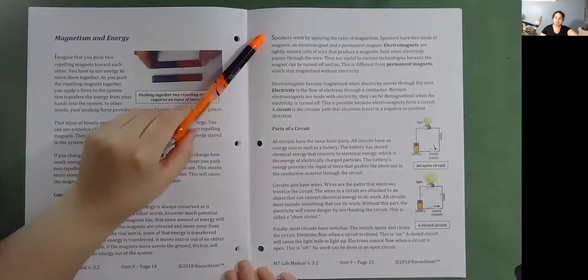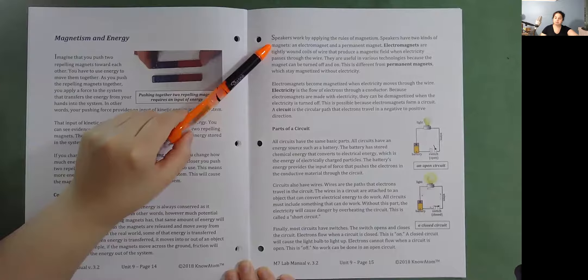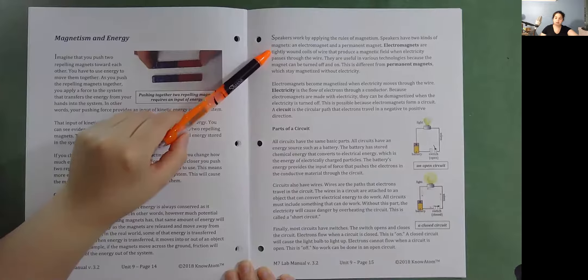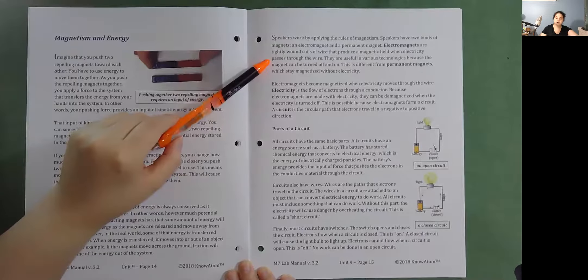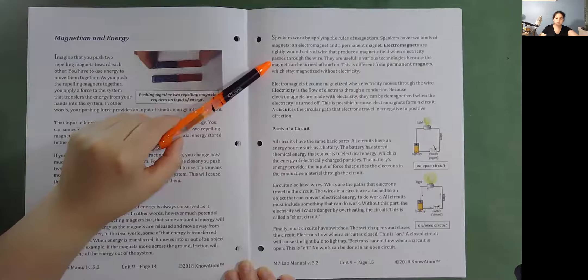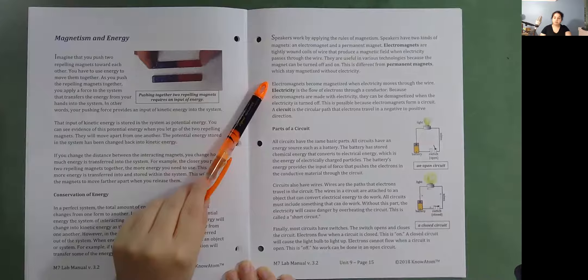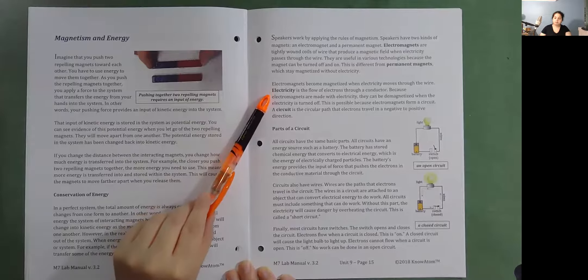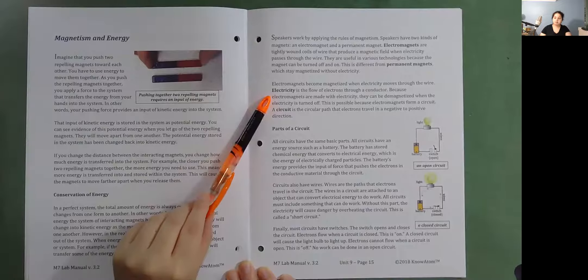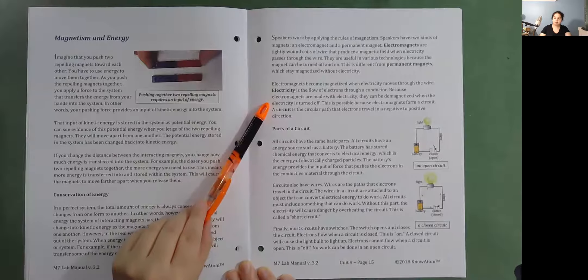Speakers work by applying the rules of magnetism. Speakers have two kinds of magnets, an electromagnet and a permanent magnet. Electromagnets are tightly wound coils of wire that produce a magnetic field when electricity passes through the wire. They are useful in various technologies because the magnet can be turned off and on. This is different from permanent magnets, which stay magnetized without electricity. Electromagnets become magnetized when electricity moves through the wire. Electricity is the flow of electrons through a conductor. Because electromagnets are made with electricity, they can be demagnetized when the electricity is turned off. This is possible because electromagnets form a circuit.